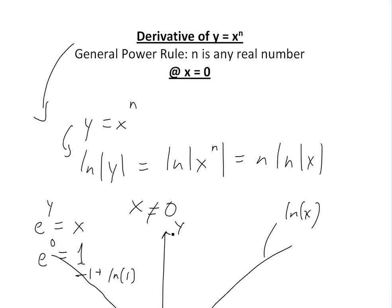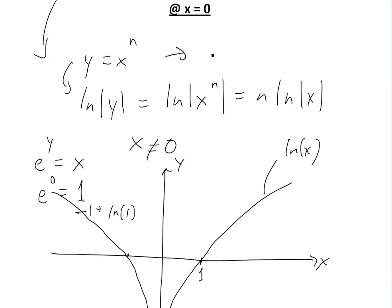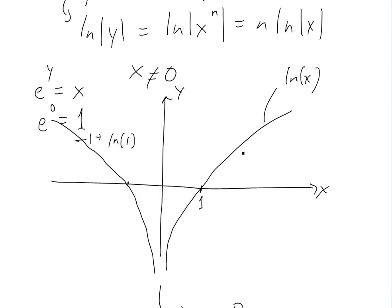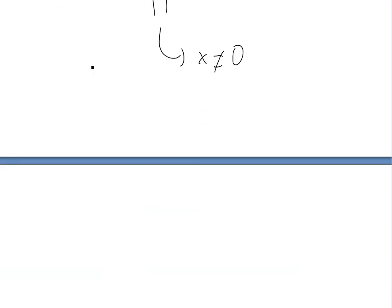So this general power rule, we found that it equals y prime equals n x to the n minus 1. But I'll show that the general power rule, even if x is 0, it still works.